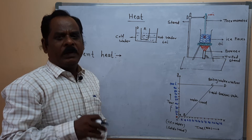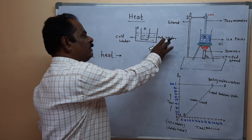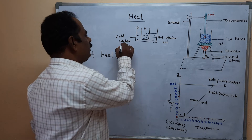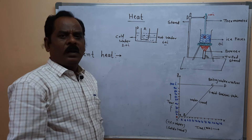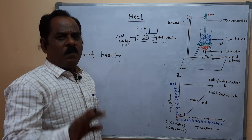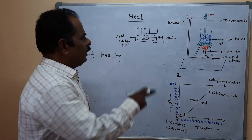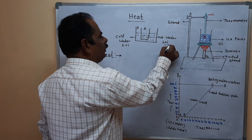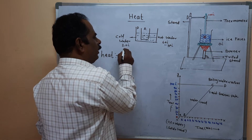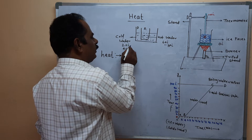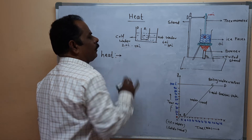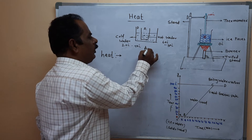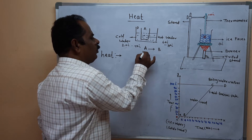How will we measure this temperature? By using a thermometer. Measure the temperature of beaker A — consider it 60 degrees centigrade. Measure the temperature of beaker B initially — consider it 20 degrees centigrade. After half an hour, measure both beakers again. The temperature of beaker A has decreased to about 30 degrees centigrade, while beaker B has increased to about 40 or 50 degrees centigrade.